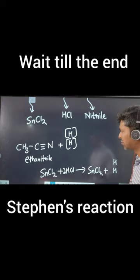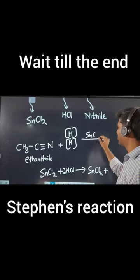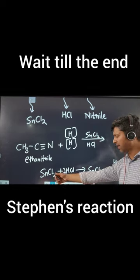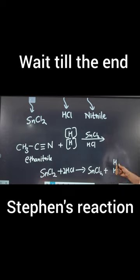SNCL2 plus 2HCl. This is an in-C2 reaction. This is what we're going to write on the arrow. This combination of SNCL2 and HCl will react and give you the products SNCL4 and nascent hydrogens.